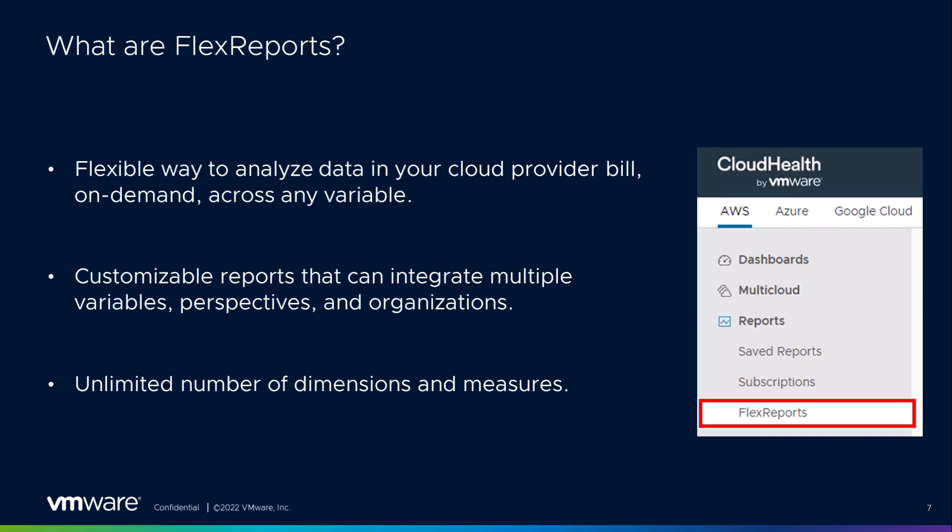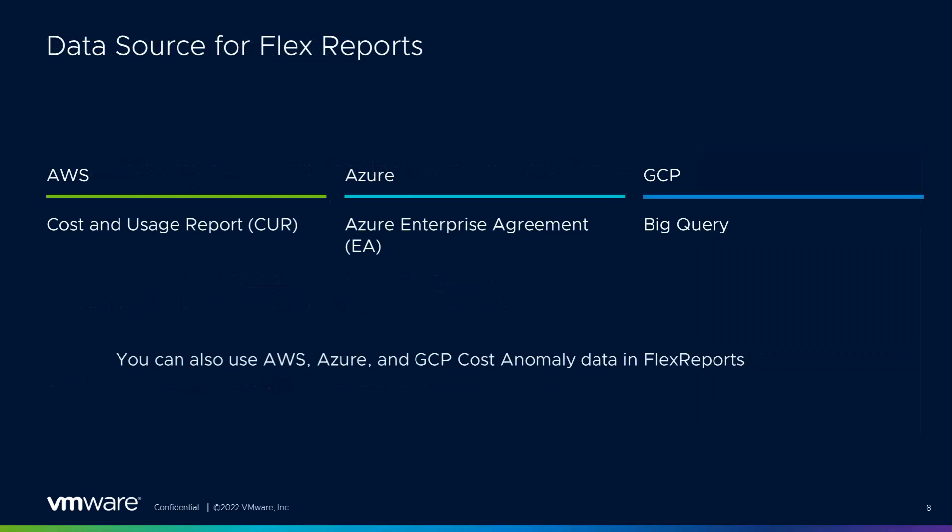It's important to know where your data comes from. Depending on the cloud, we pull from a different source. For AWS, we pull from the Cost and Usage Report — the CUR. For Azure, from the Enterprise Agreement or EA. For GCP, you can pull from BigQuery. You can also use cost anomaly data in FlexReports across all clouds.